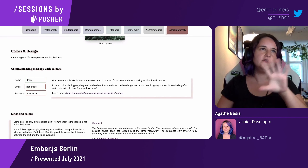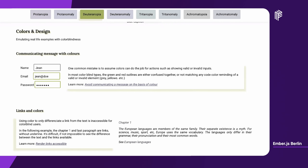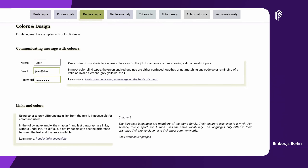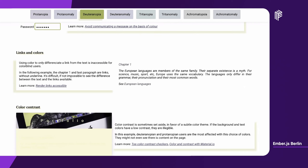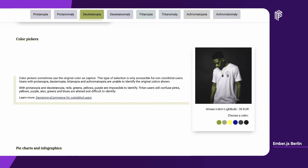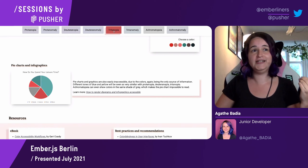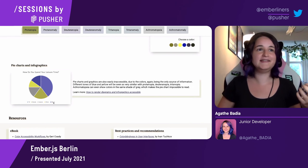I also added different practical examples you might know from experience. Forms communicating with colors only — not very useful when you can't differentiate green and red. Links, styling, or buttons where you have no clue where the button is. Color contrast, which is probably the most well-known accessibility issue. Online shopping with color pickers where you can't tell what color is shown. And pie charts and infographics that are completely inaccessible for different types of colorblindness.